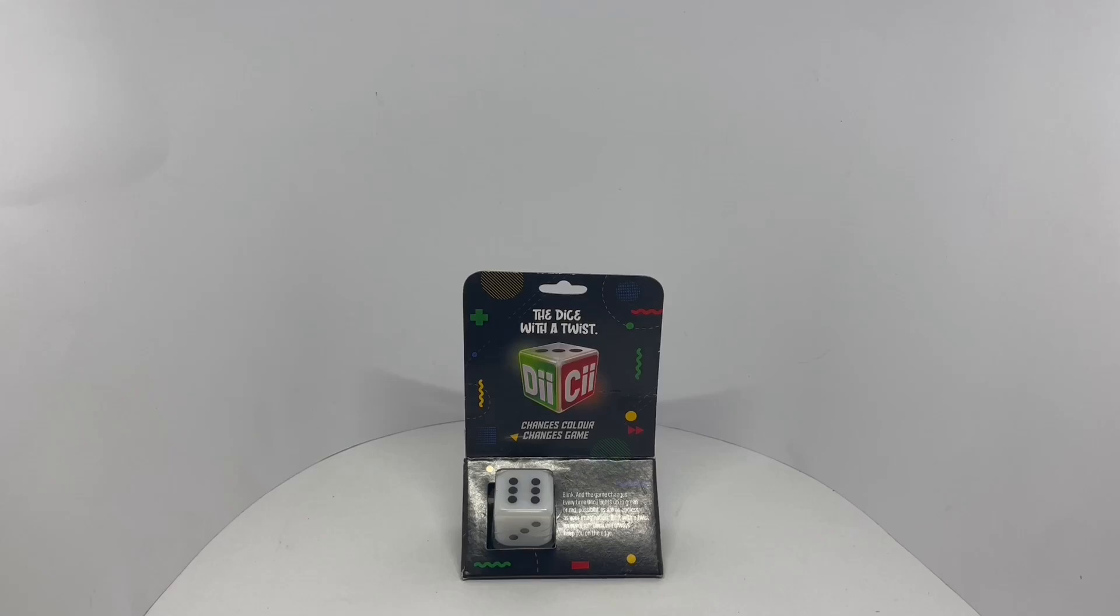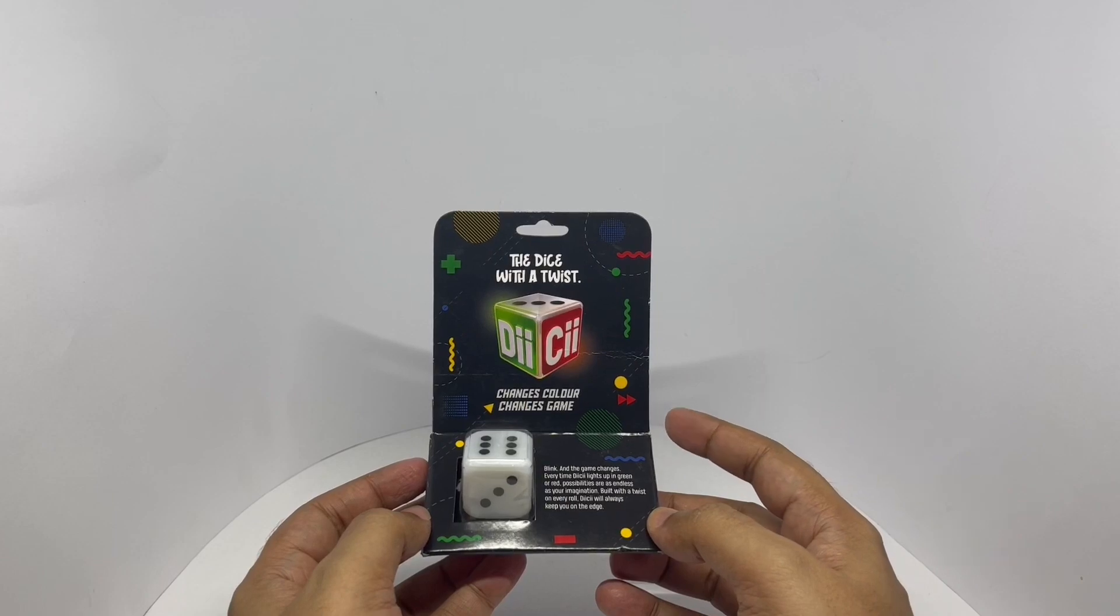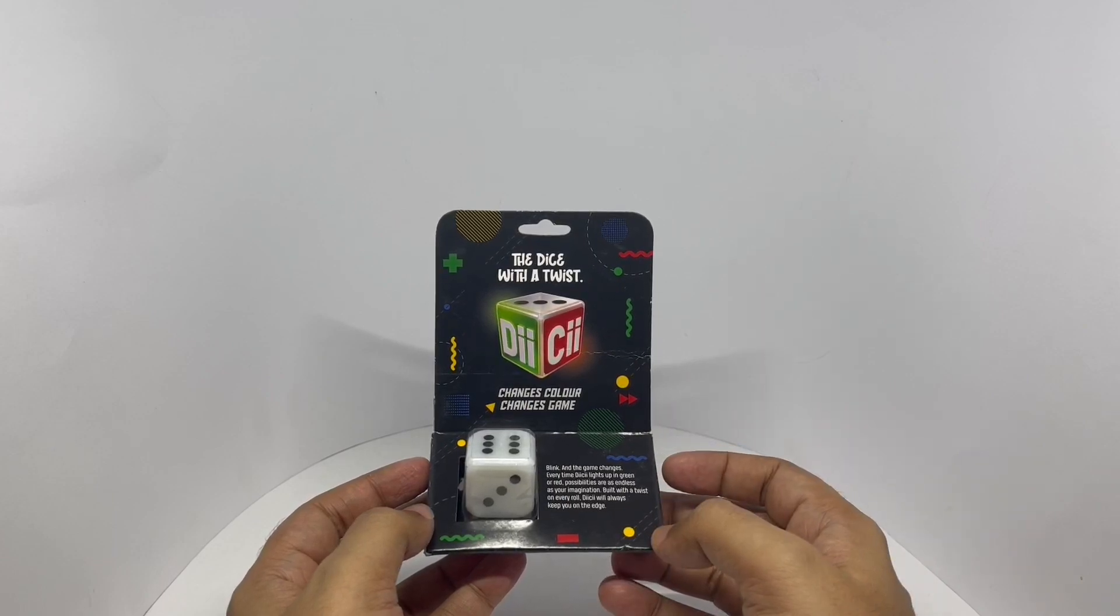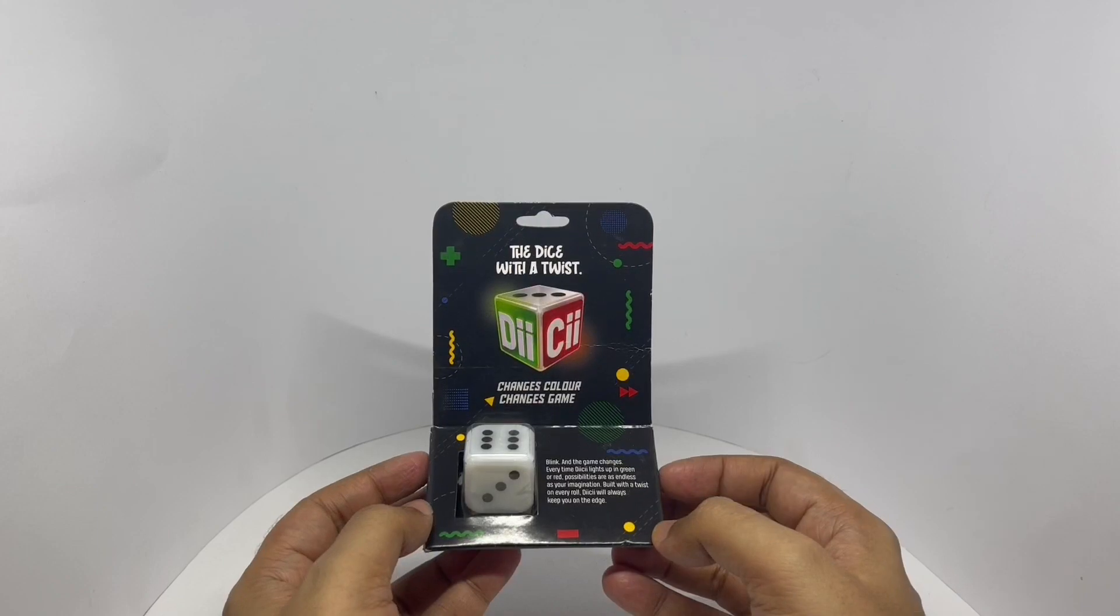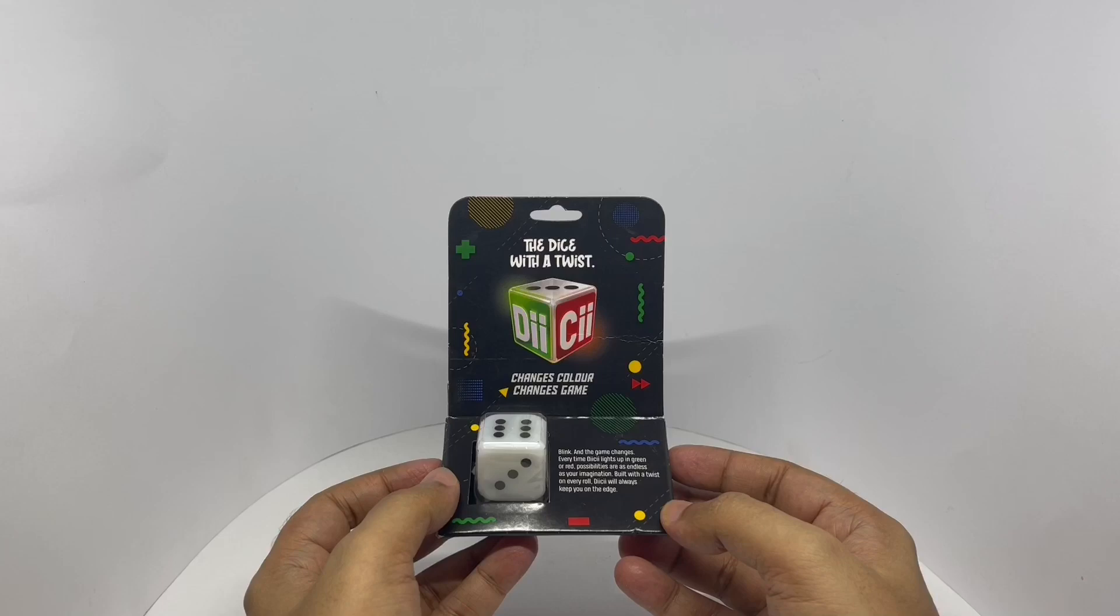Let's take a look at this dice, the dice with a twist that changes color and changes the game. Blink and the game changes. It lights up green or red. Possibilities are endless, a twist on every roll.